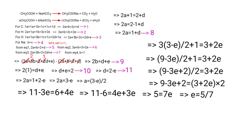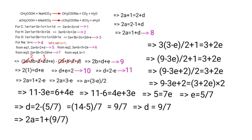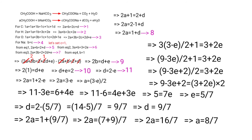Applying the E value: D equals 2 minus 5/7, which equals 9/7. Then applying D: 2A equals 1 plus 9/7 equals 16/7, so A equals 8/7. Therefore: A equals 8/7, B equals 1, C equals 1, D equals 9/7, and E equals 5/7.